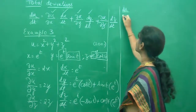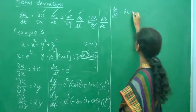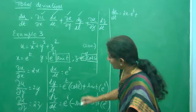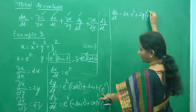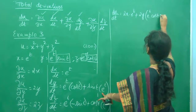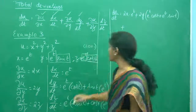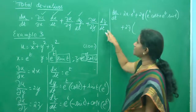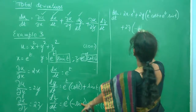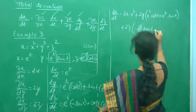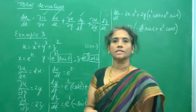So du by dt is equal to dou u by dou x into dx by dt, plus dou u by dou y into dy by dt, plus dou u by dou z into dz by dt. Substituting: 2x into e power t, plus 2y into e power t cos t plus e power t sine t, plus 2z into e power t into minus sine t plus e power t cos t. We will substitute for x, y, z and then stop.